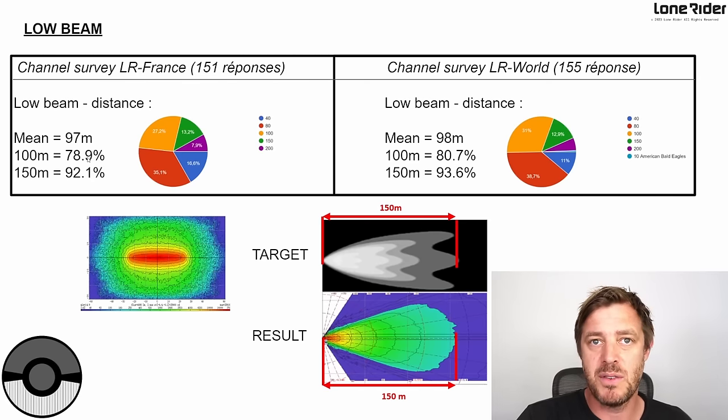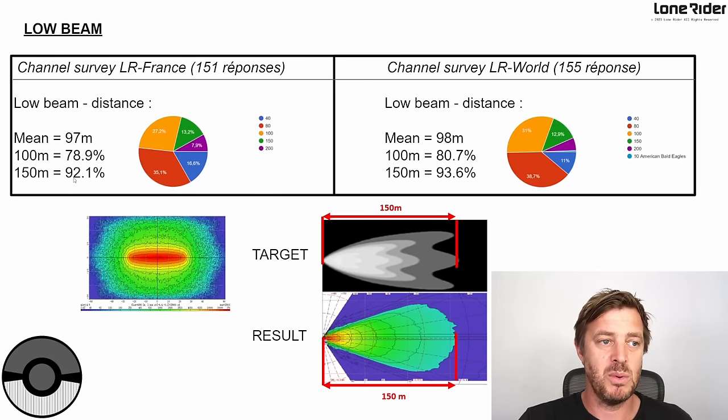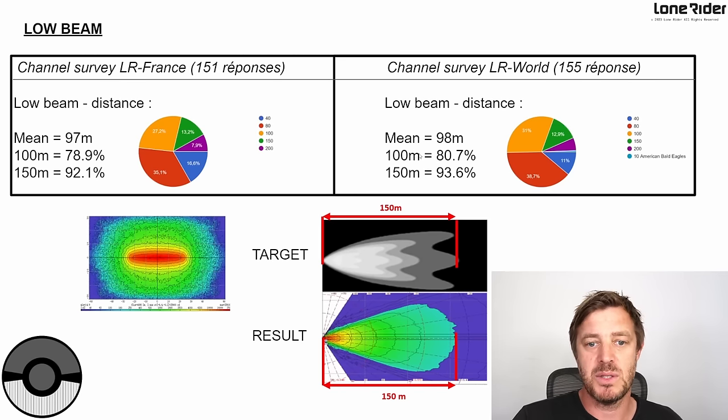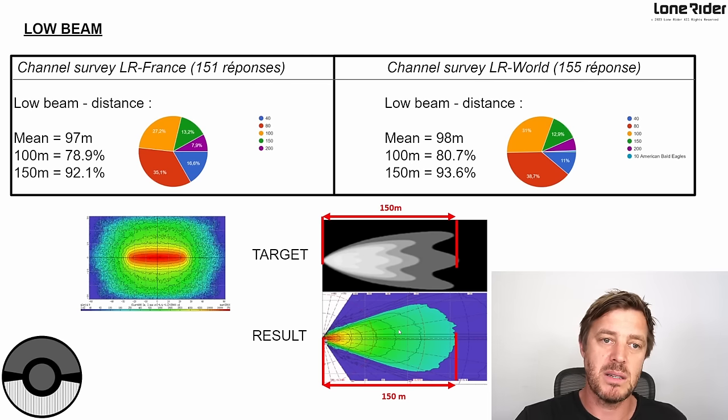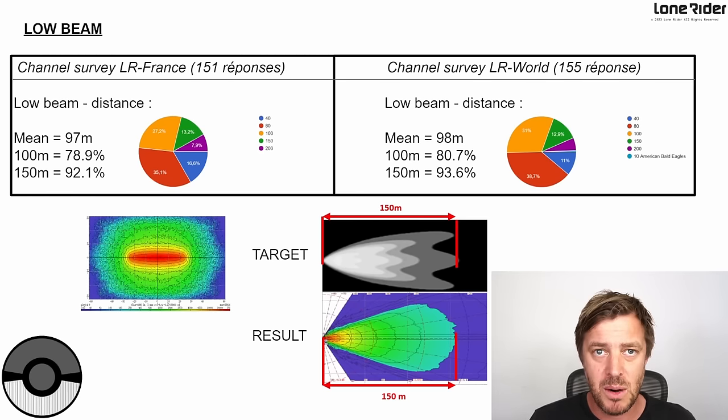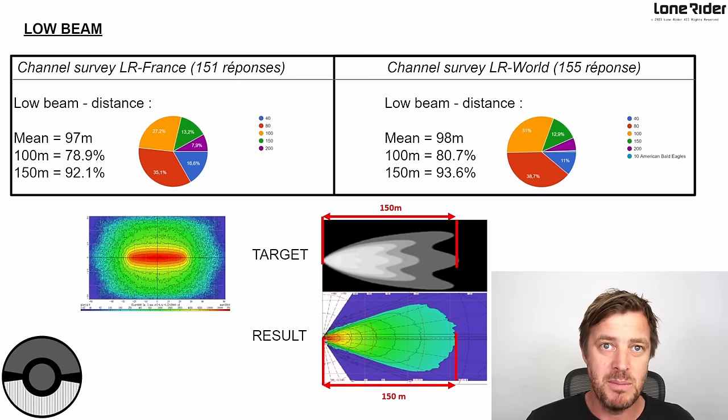At 150 meters, most people - 95%, 92.1% - wanted that. It was generally the same for the international, very similar in both the French and international channels. So our target was 150 meters and we got 150 meters from that. That's the day-to-day general driving light. If you look into what's out there now, most of these guys are producing lights that at low beam go about 100 meters. So we got an extra 50 on there. That's really good - you guys wanted that extra and we've given it here.